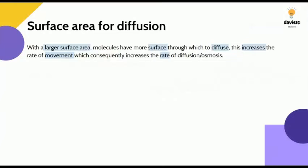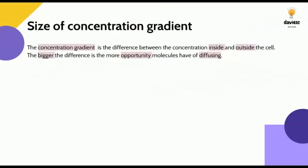When we change the surface area, a larger surface area provides more surface to diffuse across, which increases the rate of diffusion. With the size of the concentration gradient, it's the difference between the concentration inside and outside the cell — where they are to where they're moving to — and the bigger this difference, the more opportunity molecules have to diffuse.